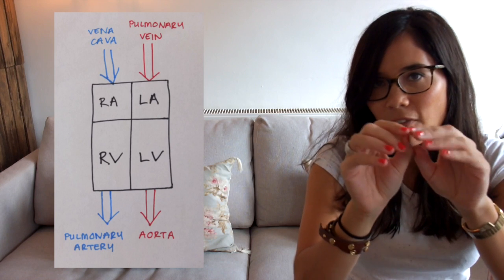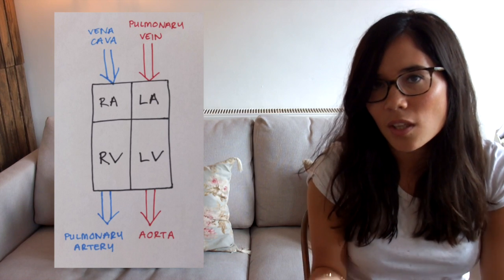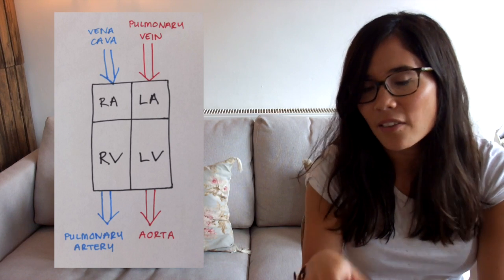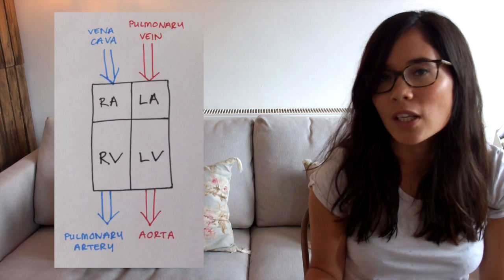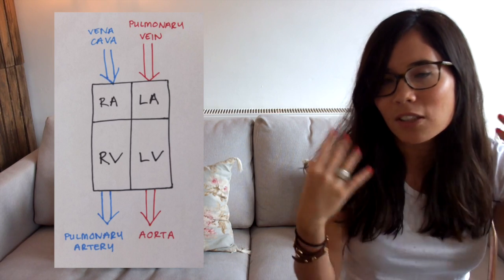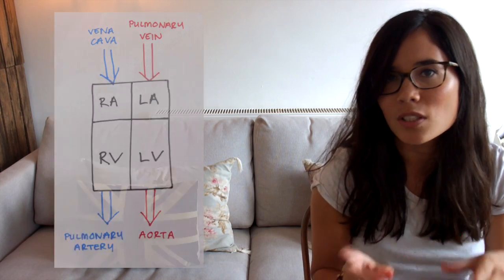From there it flows into the left ventricle, and then it flows out of the heart via the aorta, where it goes around the rest of the body to deliver oxygen to cells which are respiring, as they need it for aerobic respiration. You can imagine the blood then becomes deoxygenated because all the cells have taken the oxygen.